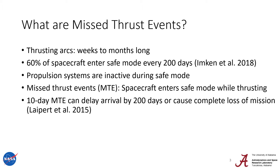Electric propulsion and other low thrust propulsion methods are an enabling factor for many deep space missions. They're highly efficient and allow an order of magnitude reduction in the propellant mass of spacecraft. Unfortunately, as their name implies, they have very low amounts of thrust. So instead of a spacecraft thrusting for minutes to seconds, they now need to thrust for weeks to months at a time. And 60% of spacecraft enter a safe mode every 200 days. In these safe modes, the spacecraft shut down non-essential subsystems, like propulsion, to focus on power generation and communicating with Earth. If one of these safe modes overlaps with a thrusting arc, that is a missed thrust event. And even a 10-day missed thrust event can delay arrival by 200 days or even cause the complete loss of the mission.